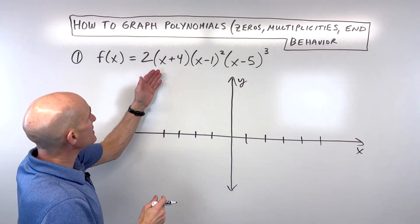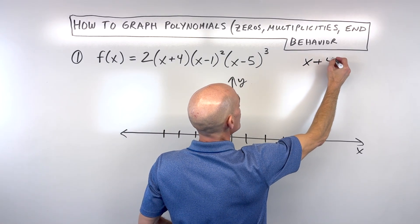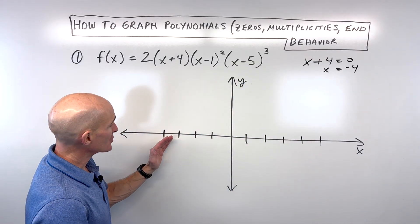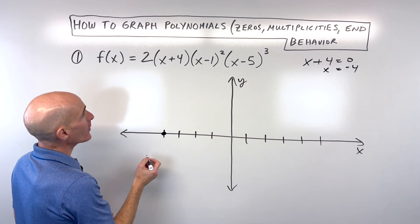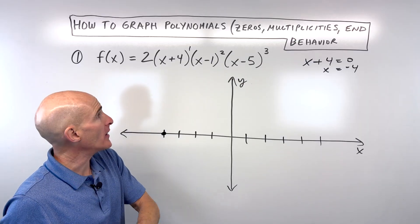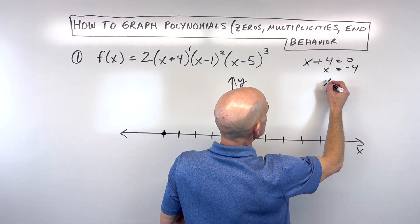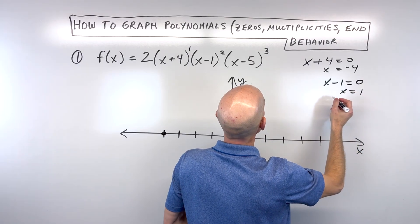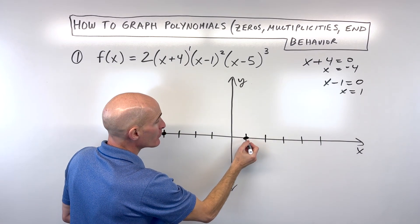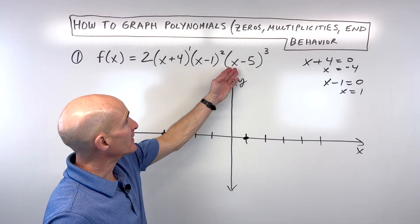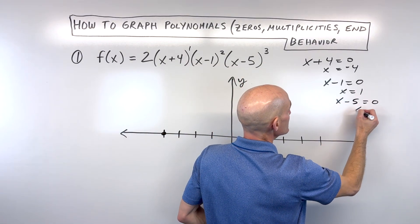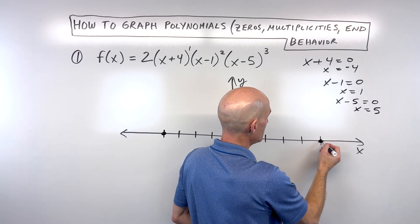Each factor is like a group. So if we set x plus 4 equal to zero and subtract 4 from both sides, x equals negative 4. So that means it's going to cross the x-axis right at negative 4. Notice that this only occurs one time — you can think of this as a multiplicity of 1. When we set x minus 1 equal to zero, we get x equals 1, but that's with a multiplicity of 2.